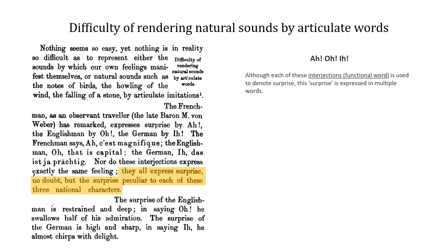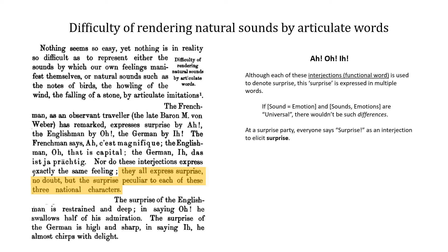Mueller's key point here is that there remains something outside the actual articulation that is governing how the articulation manifests. Although all of these interjections — which are functional words — are used to denote surprise, this surprise is expressed in multiple different words. So if sounds were merely reflective of particular emotions, and sounds and emotions were both universal, then we shouldn't see a difference in how they manifest. But let's return to this notion of signifying something outside of language — there are two principal methods used to signify this externality: the first is contradiction (something we'll return to later), and the other is the self-referential, that is, turning something towards itself.